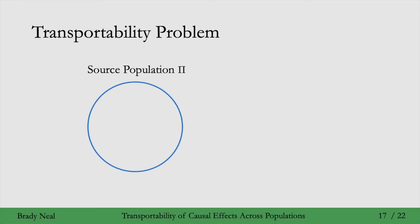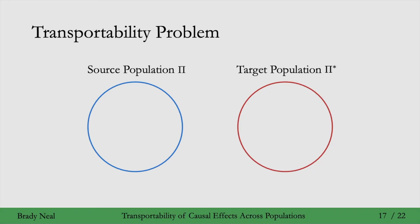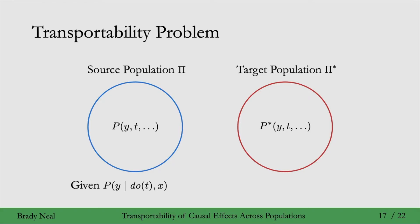More specifically, here's the transportability problem. We have a source population π and a target population π*. We'll denote the distribution for the source population as p and the distribution for the target population as p*. We're given p(y | do(t), x), some interventional distribution in population π — we might have done some experiments to get that distribution — and we're interested in the corresponding estimate in the target population, p*(y | do(t), x). How can we identify this estimate given observational data p* and given interventional distributions from the source population, and also observational data from the source population?